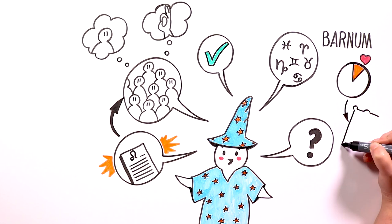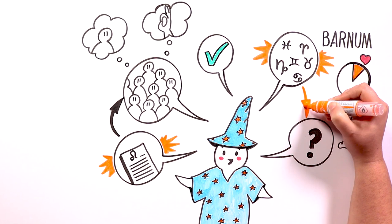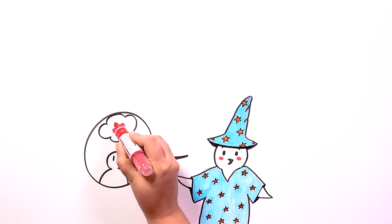Some describe it as a little something for everyone. Because if the phrases are well-formulated, they will make many people see themselves reflected in them. This is what happens with the horoscope, which is why we ask you that question at the beginning of the video.